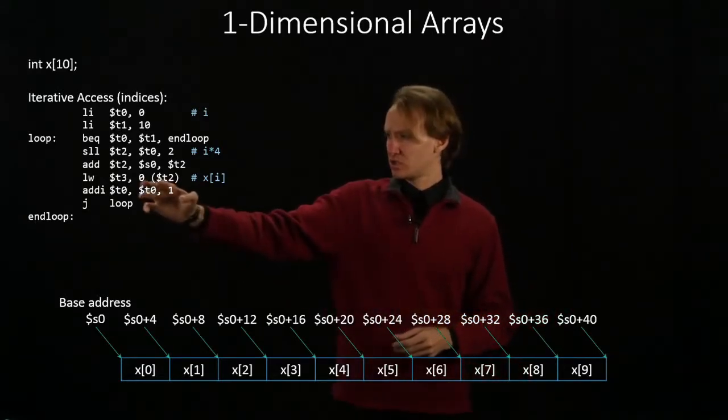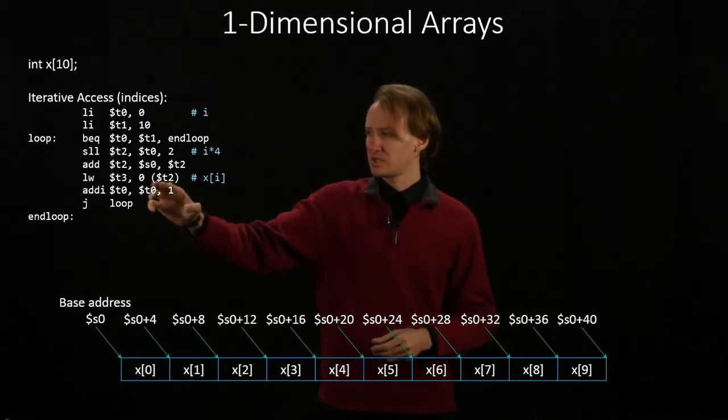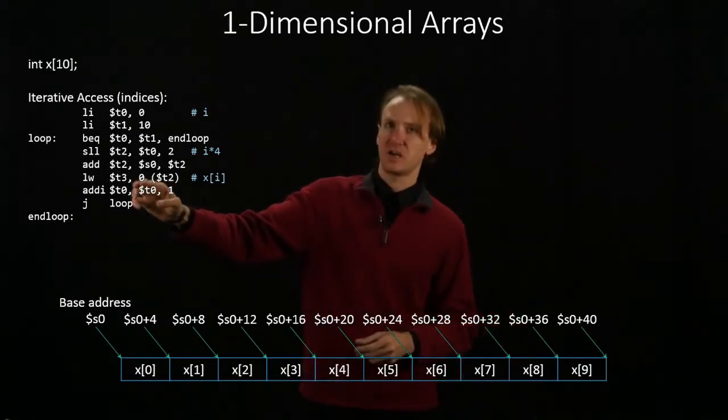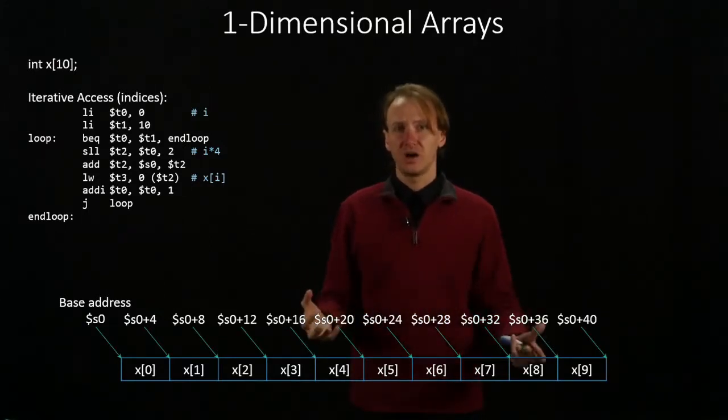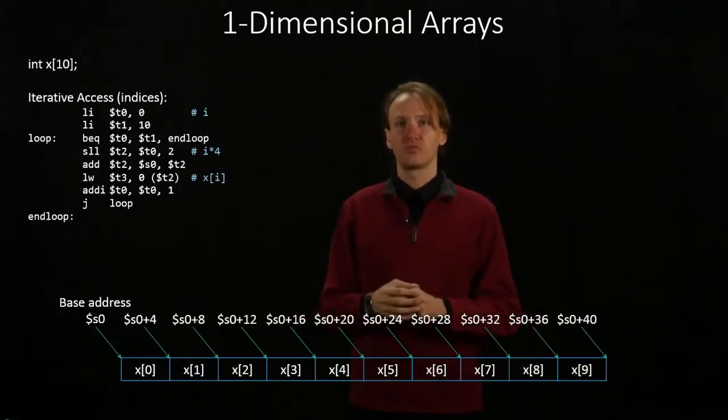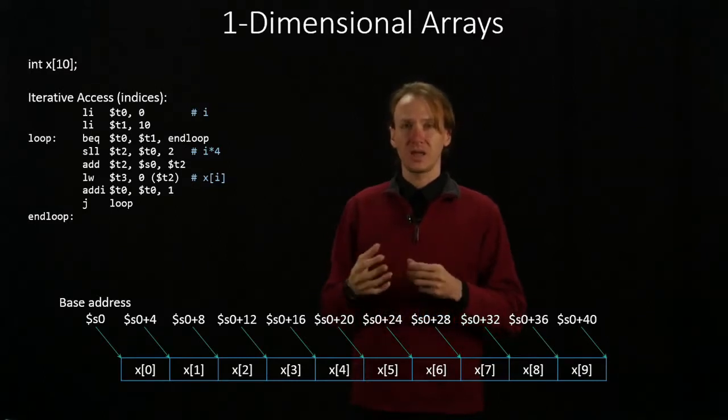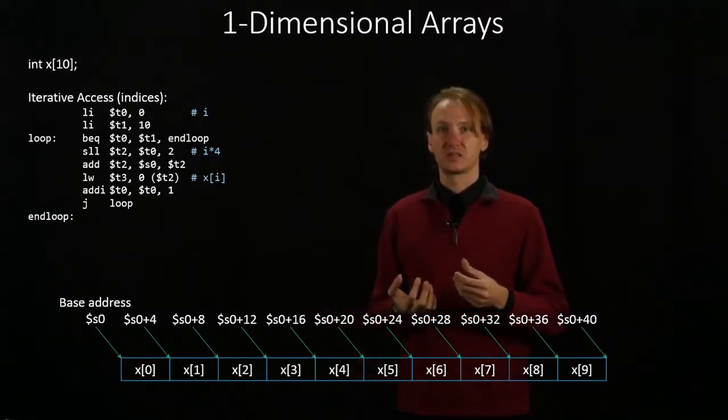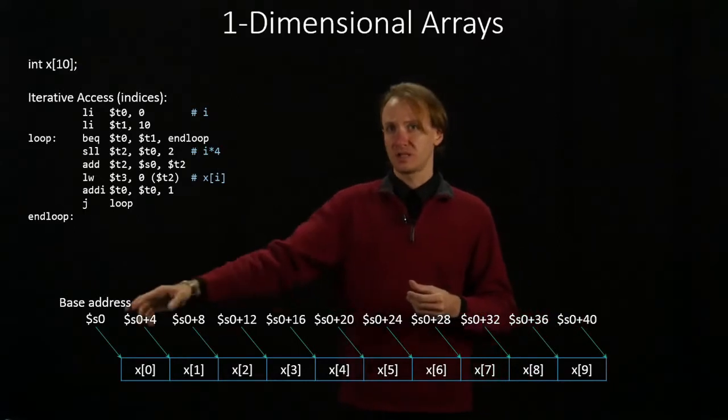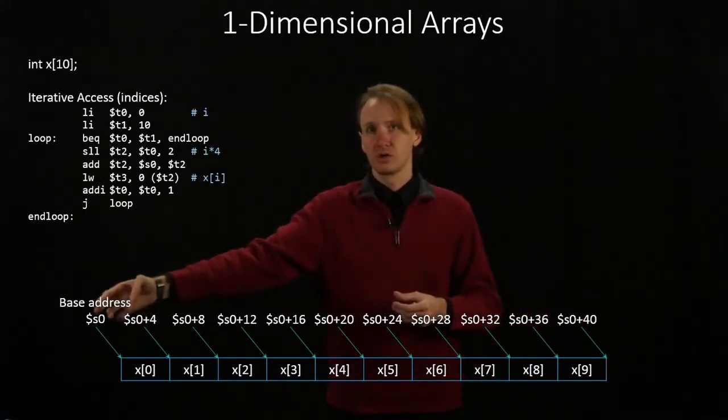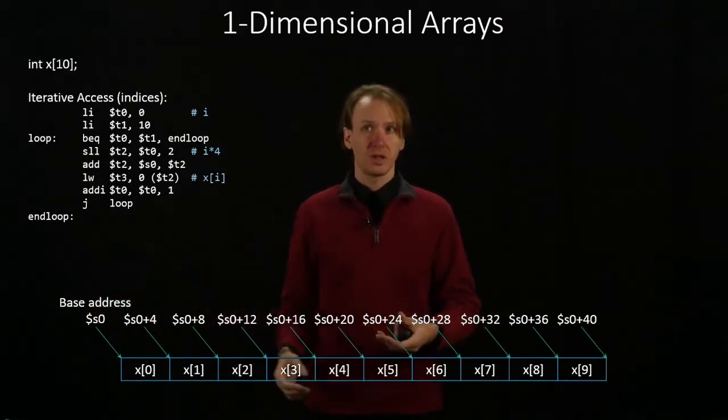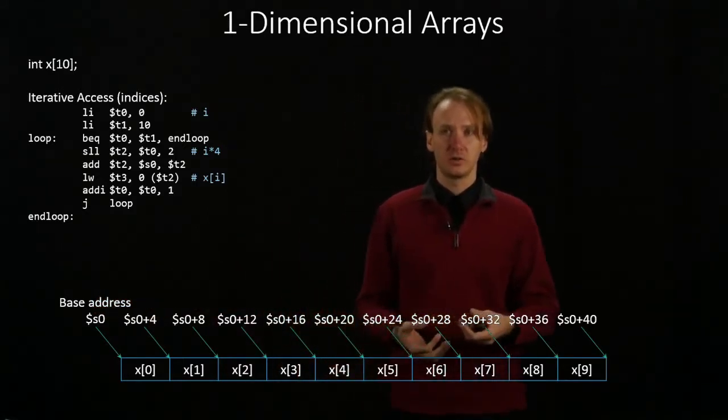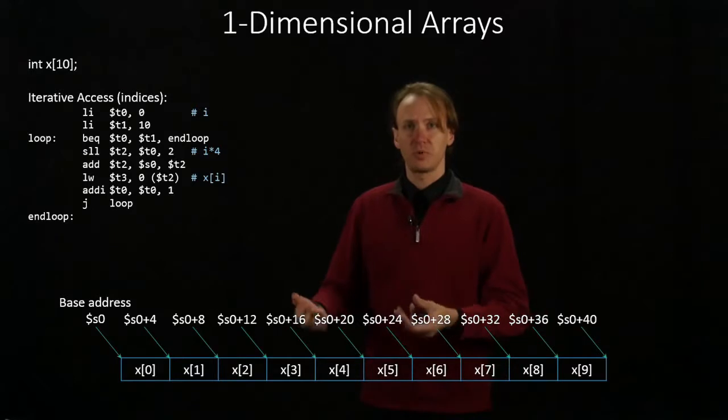Then, because my load word instruction takes this form, where I've got a base address and a constant offset, I really need to get both that base address and the offset into one register. I can't put the offset in as the constant in this case. So I add the base address from s0 to the offset that I calculated and put in t2, and then I'm just storing that into t2 as a reasonable place to keep it.